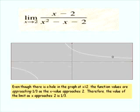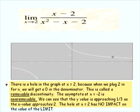Even though there's a hole in the graph at x equals 2, the function values are approaching one-third as x approaches 2. Therefore, the value of the limit as x approaches 2 is one-third. There's a hole in the graph at x equals 2 because when we plug 2 in for x, we get a 0 in the denominator. This is called a removable discontinuity; the asymptote at x equals negative 2 is non-removable. The hole at x equals 2 has no impact on the value of the limit.